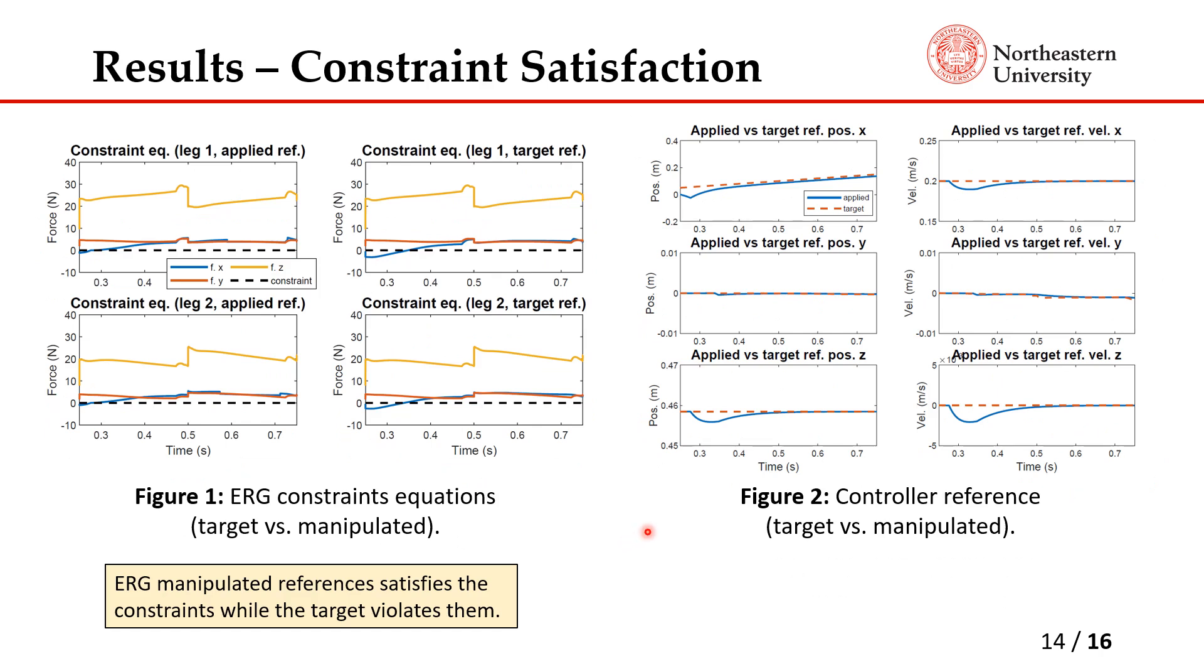In this slide we compare the constraint equations between applied and target reference. On the left is the applied reference. As you can see here, at the beginning it's somewhat violating it and the algorithm pushes it away from the constraint towards the allowable region. On the other hand, if the robot keeps following the target reference as you can see here, it will be violating the constraint, and that's why it slipped at the start of the animation shown. This is the difference between the applied and target. You can see this is our target reference and it immediately goes the other way, doing something different compared to this target reference in order to satisfy this constraint. That way, the robot is able to walk stably on a slippery surface.